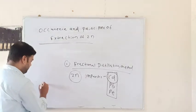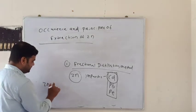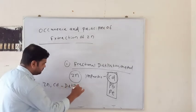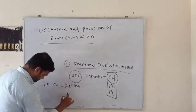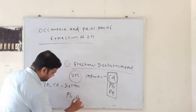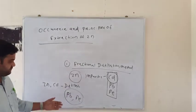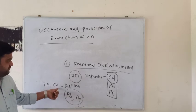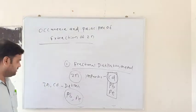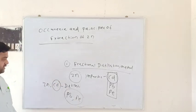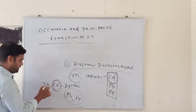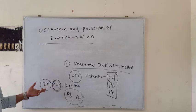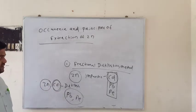In the first phase of fractional distillation, zinc and cadmium are separated out together, while lead and iron are removed by distillation. Then zinc and cadmium go through fractional distillation again. Since cadmium has the lower boiling point, it distills off first, and pure zinc can be collected. This completes the fractional distillation process.